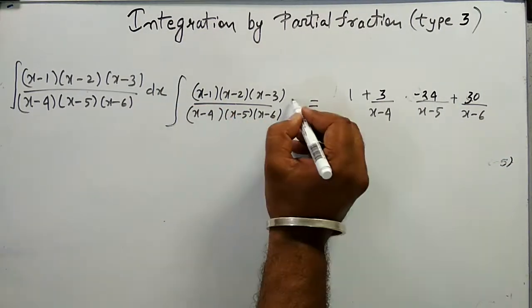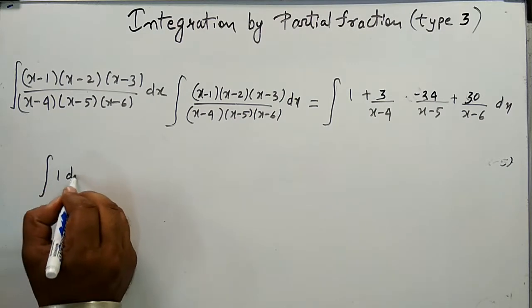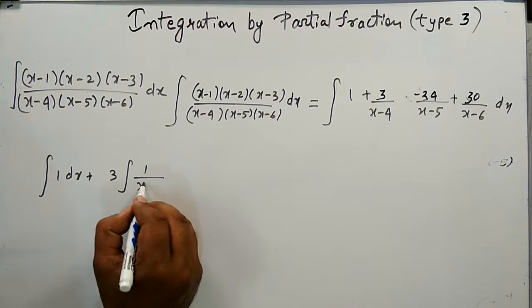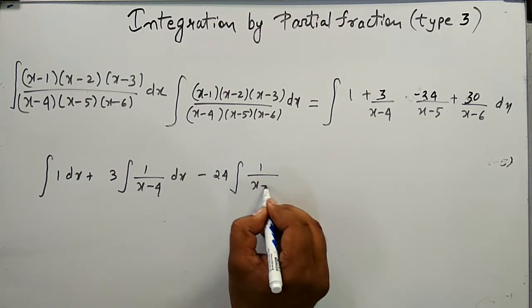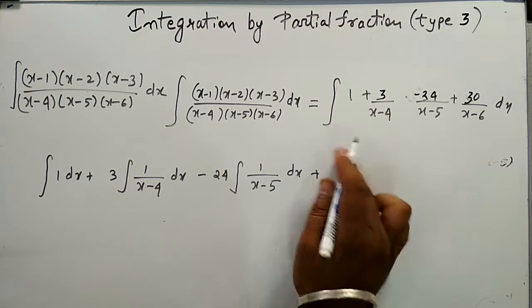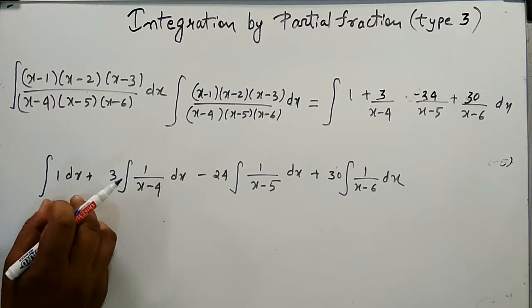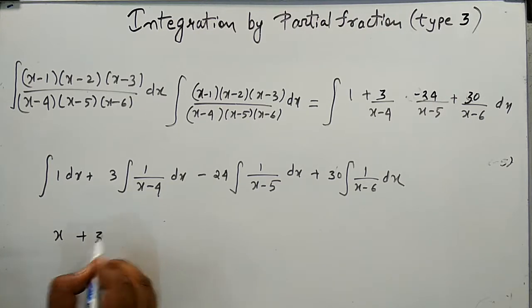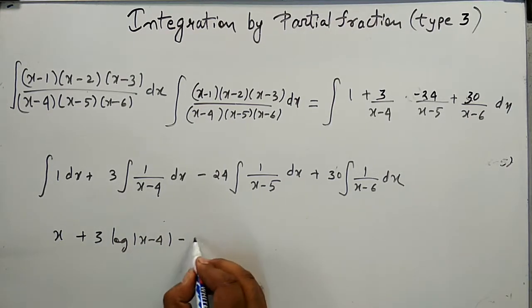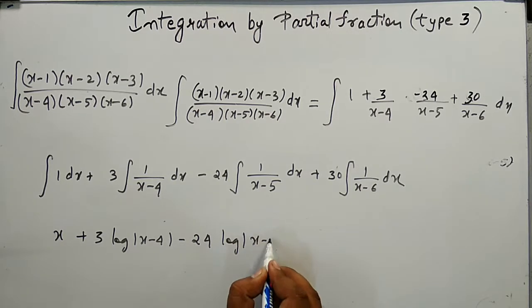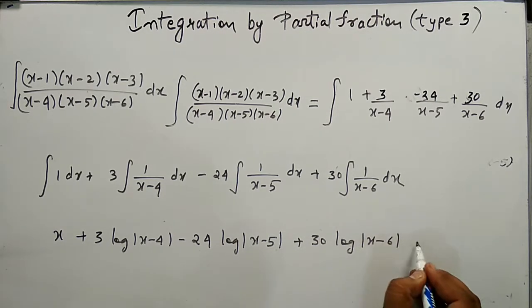The integration of this expression equals the integral of 1 dx, plus 3 times integral of 1/(x−4) dx, minus 24 times integral of 1/(x−5) dx, plus 30 times integral of 1/(x−6) dx. Evaluating these gives: x + 3log|x−4| − 24log|x−5| + 30log|x−6| + C.